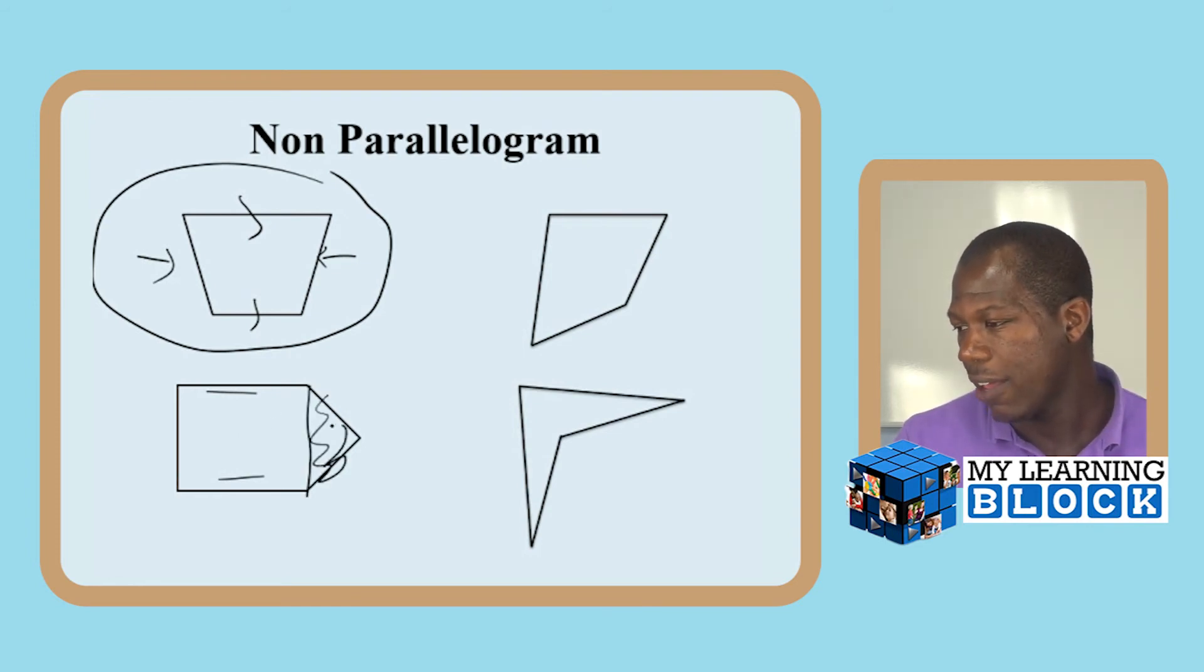This shape, again, you have no pairs of parallel sides. And this shape, yes it is a quadrilateral because you see one, two, three, four and one, two, three, and then this is the angle right here, four. But it's also a non-parallelogram. So when you're working with your child, these are certain things that you can know so you can better help them out.